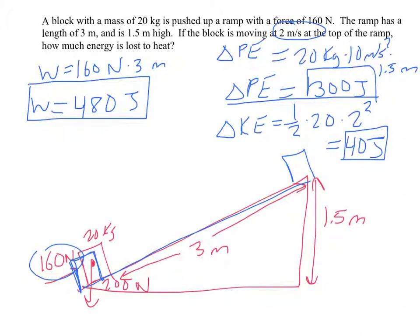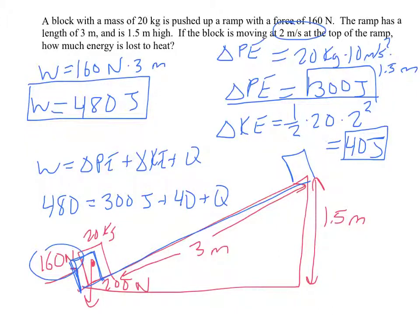So our work, remember, could do three things. Work could give you change in potential, change in kinetic, or heat. So we used 480 in work. That gave us 300 in potential. It gave us 40 in kinetic. So the rest must have been lost as heat. If we solve for heat here, 480 minus 340, we will get 140.